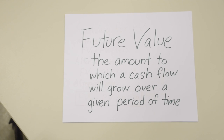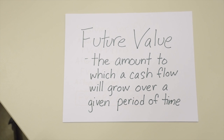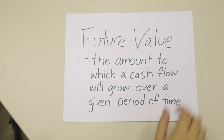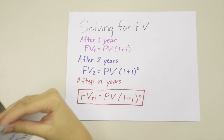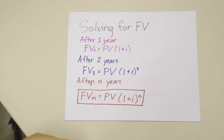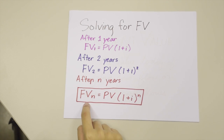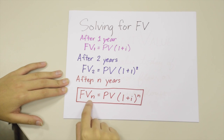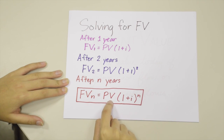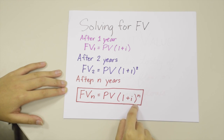So now, let's move on to future value. Future value is the amount to which a cash flow will grow over a given period of time. In solving for the future value, we must use the general formula: FV_N = PV × (1 + interest rate)^N.